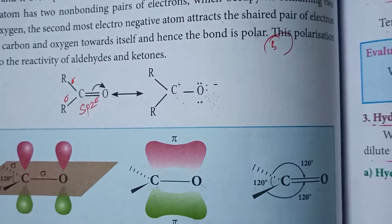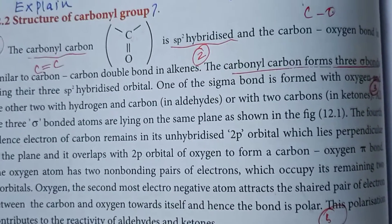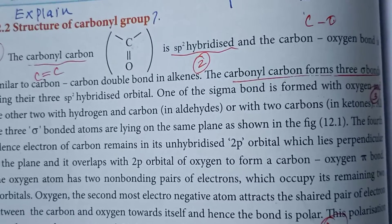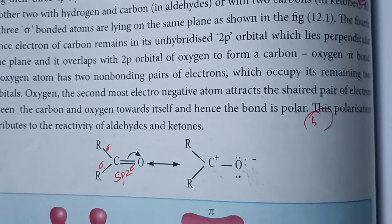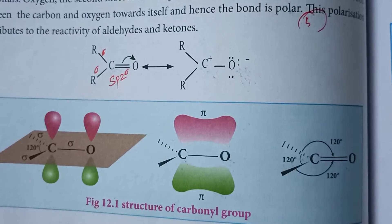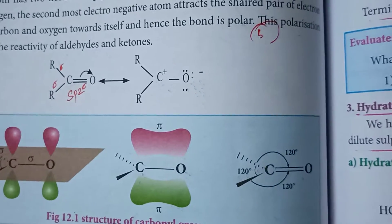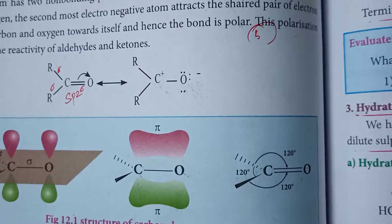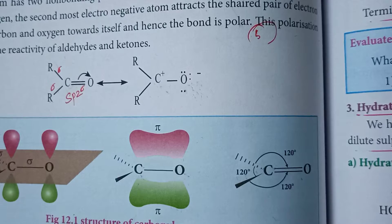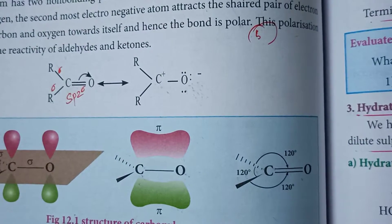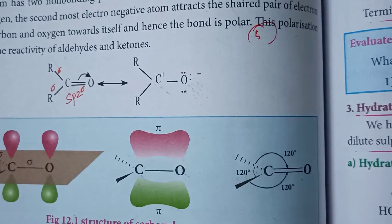To summarize the structure of the carbonyl group: the hybridization of the carbon atom in the carbonyl group is sp2. The number of sigma bonds is three and there is one pi bond. The bond angle is 120 degrees. The non-bonded electrons on the highly electronegative oxygen atom cause polarization, and this high electronegativity of oxygen is responsible for the high reactivity of aldehydes and ketones.